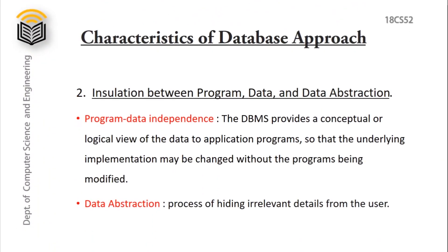Second characteristic is insulation between program, data, and data abstraction. In a traditional file processing system, the structure of a file is embedded in the application program, and for any small changes, the entire file must be replaced or modified. But in DBMS, we have a feature called program-data independence. DBMS will provide a logical view or structure of data to the application separately in the catalog or metadata, so that for any changes, if we just change the metadata, it will be reflected in the data — no need to change the entire program.